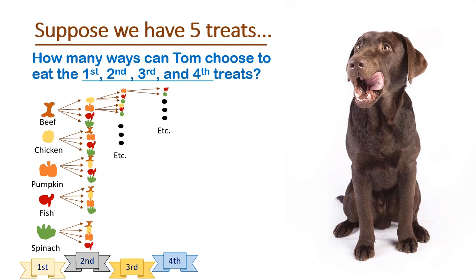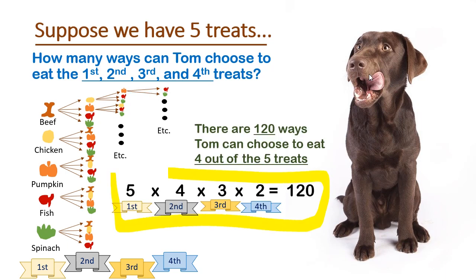Okay, so hopefully you're starting to see the pattern here. If Tom gets to eat four out of the five treats, he will have two left over after eating three treats. So there will be five times four times three times two equals 120 total ways Tom could eat four out of the five treats.